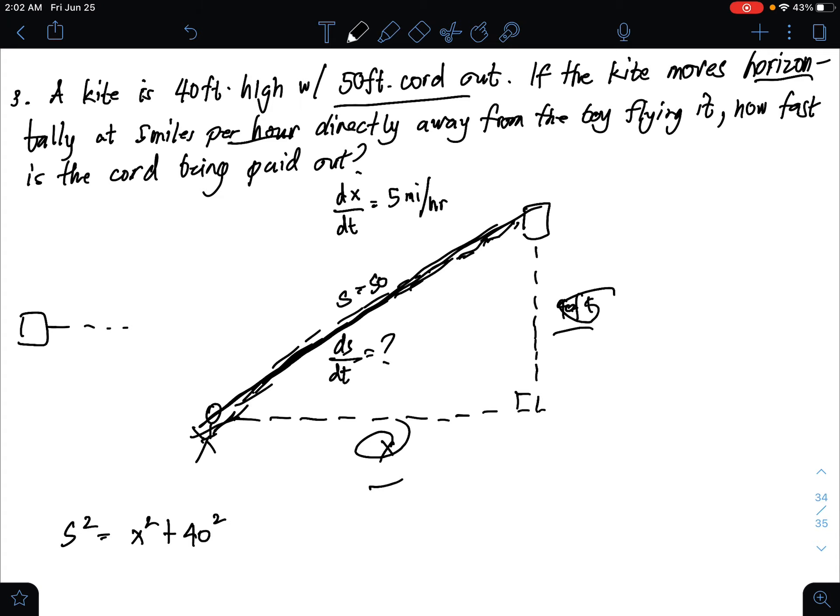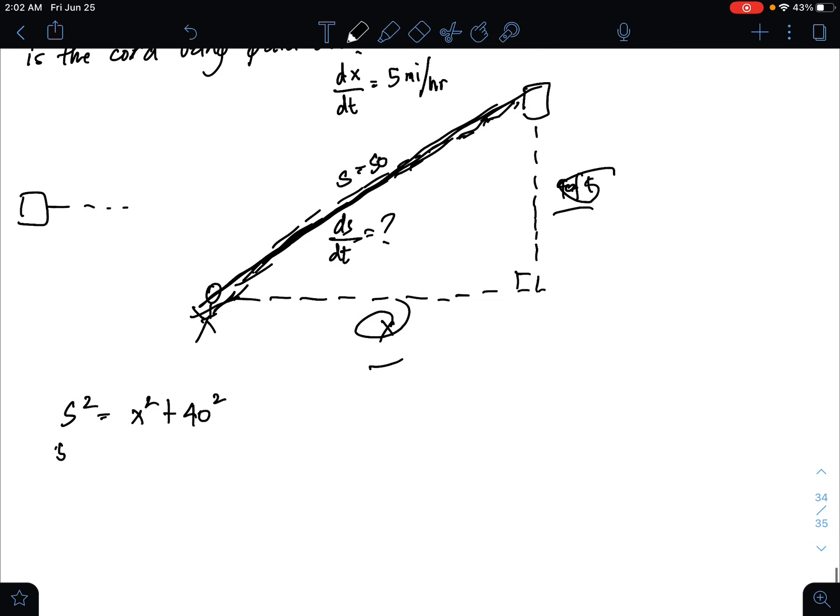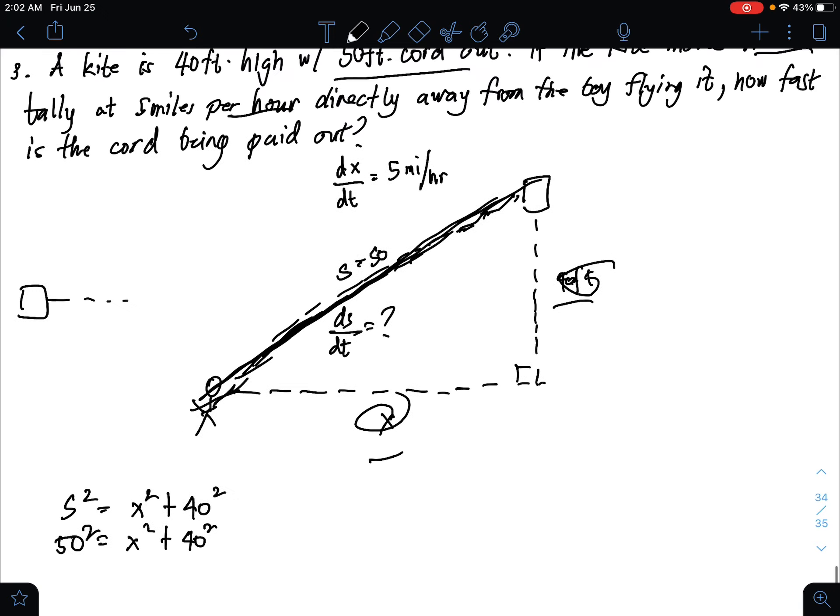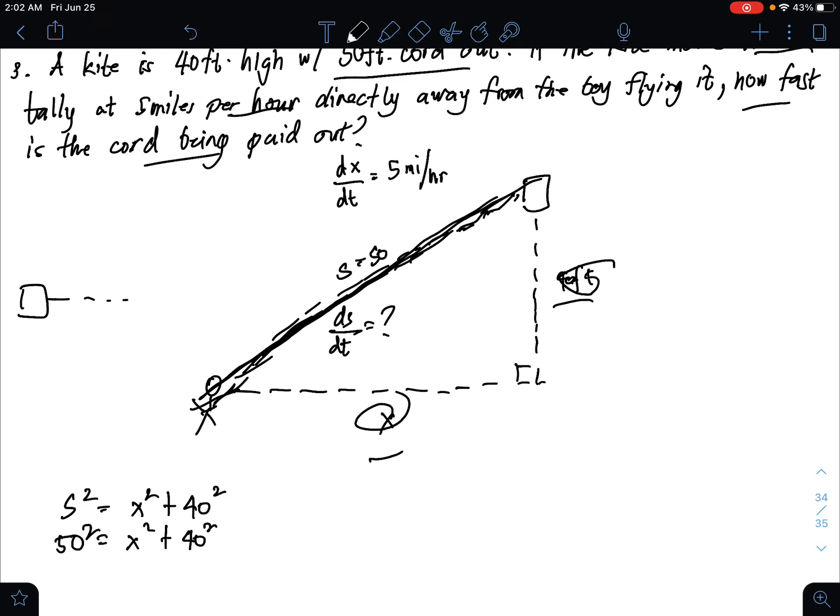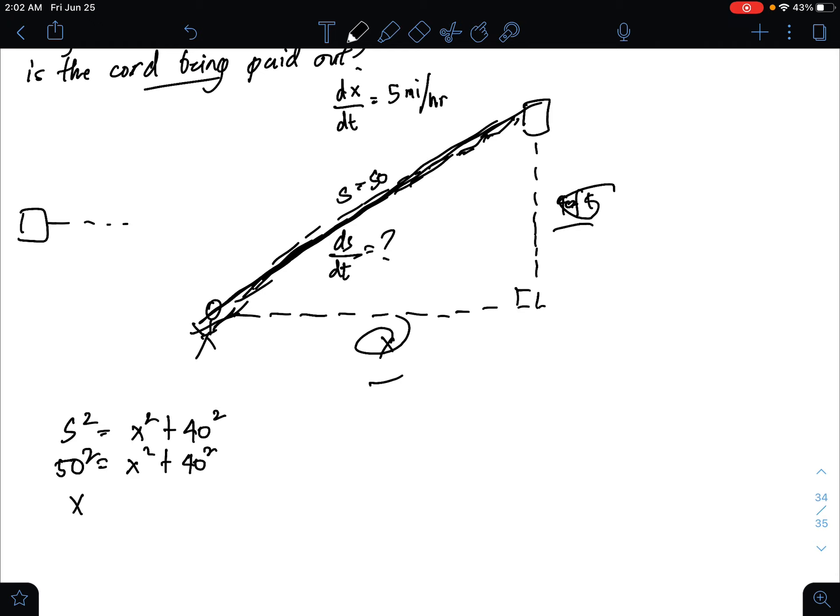What we're looking for is how fast. So 50 feet now. 50 squared equals X squared plus 40 squared. What we're looking for is dS over dt. So we can get X. X equals 50 squared minus 40 squared square root, that is 30 feet. Our next goal, if this is the equation, what we're looking for is dS over dt.